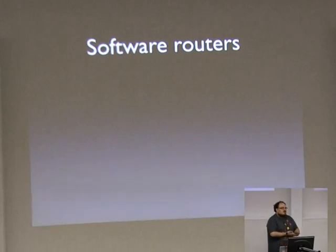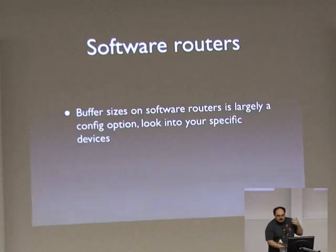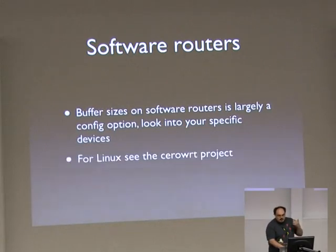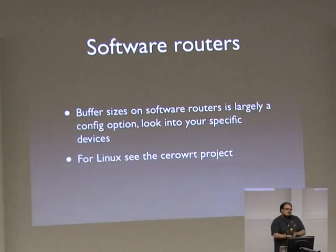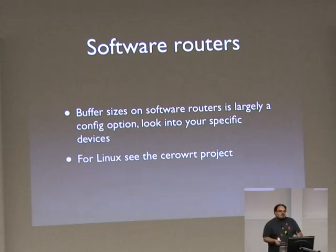For those of you that run software routers - so anyone using Linux, anyone looking at software-defined networking where the edge of the network is a Linux box - configure something. Buffer sizes are all config options, basically. You can and really should configure them. Given that it's probably a Linux-based thing, look at the CeroWrt project, which is a dev project coming out of the buffer bloat group, where they basically took OpenWrt and tried to fix everything they could find to fix buffer and latency problems.